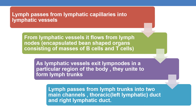Lymph passes from lymphatic capillaries into lymphatic vessels, then flows through lymph nodes, which are encapsulated bean-shaped organs consisting of masses of B cells and T cells. As lymphatic vessels exit lymph nodes in a particular region, they unite to form lymph trunks. Lymph then passes from lymph trunks into two main channels: the thoracic left lymphatic duct and the right lymphatic duct.